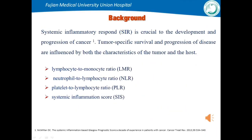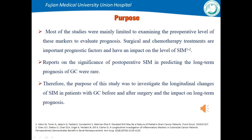Systematic inflammatory response is crucial to the development and progression of cancer. Tumor-specific survival is influenced by both the characteristics of the tumor and the host. Studies have shown that systematic inflammation markers including lymphocyte-to-monocyte ratio, neutrophil-to-lymphocyte ratio, platelet-to-lymphocyte ratio, and systematic inflammation score are significant prognostic factors in various tumors including gastric cancer. However, most studies were mainly limited to examining preoperative levels of these markers.